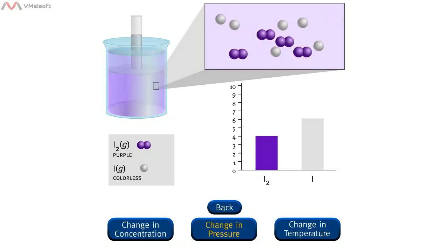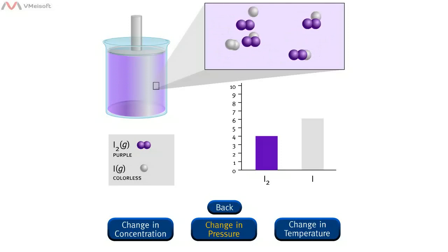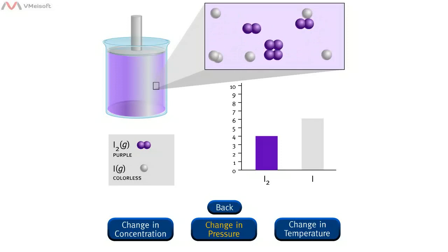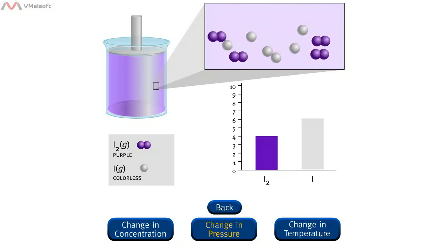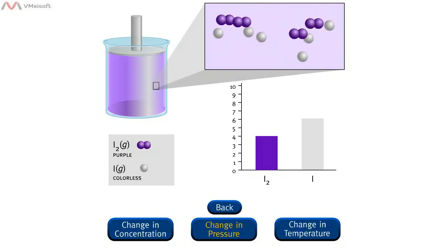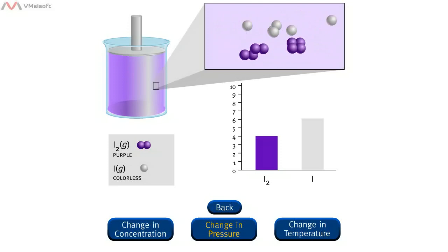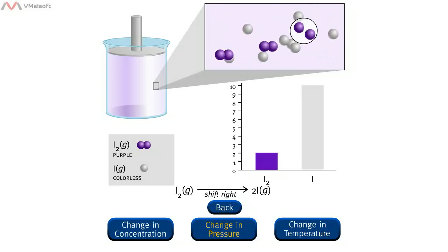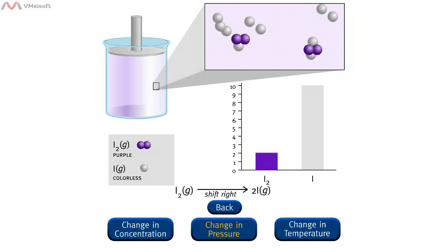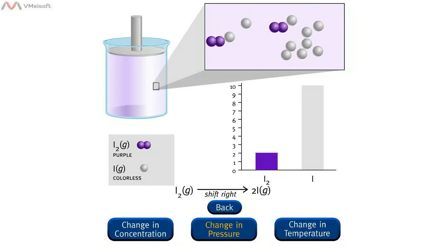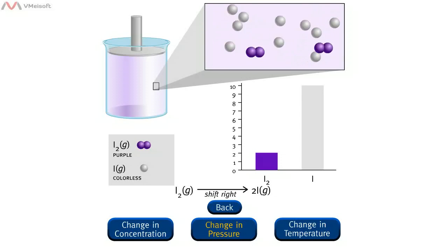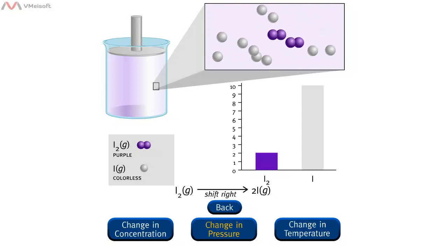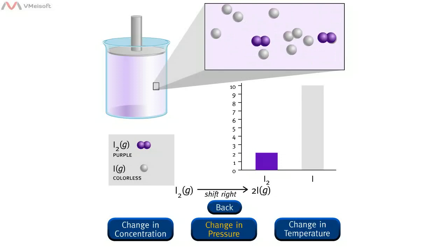When you decrease the pressure by increasing the volume of the container, Le Châtelier's principle states that this stress will be partially offset. The system can partially offset this stress by increasing the moles of gas. Pressure is directly proportional to the moles of gas. Because of the 2 to 1 mole ratio in the balanced equation, more moles of gas can be produced if the system shifts to the right, producing more iodine atoms, as you can see in the microscopic view. As more iodine atoms, which form a colorless gas, are produced, the color of the equilibrium mixture lightens, as you can see in the macroscopic view.